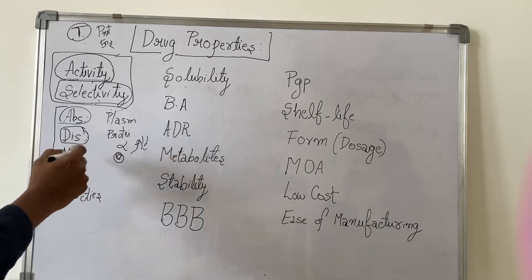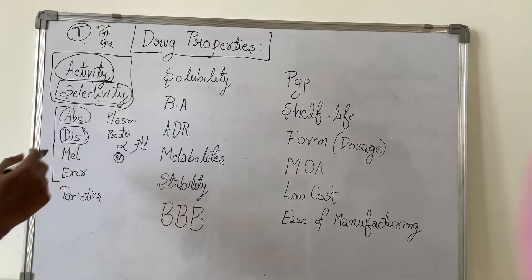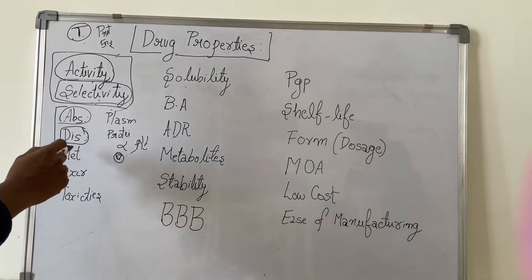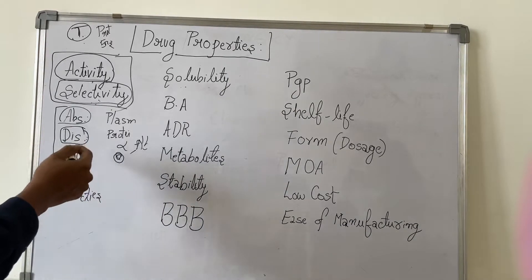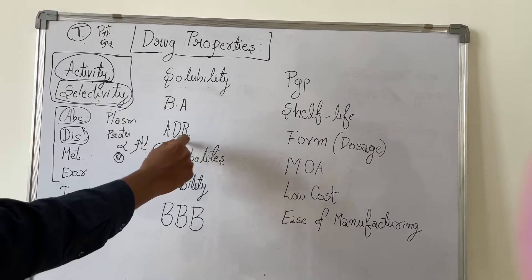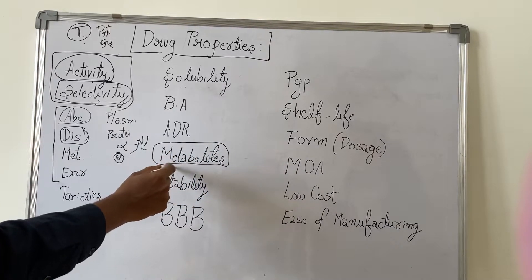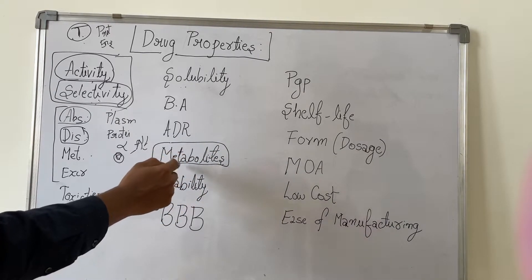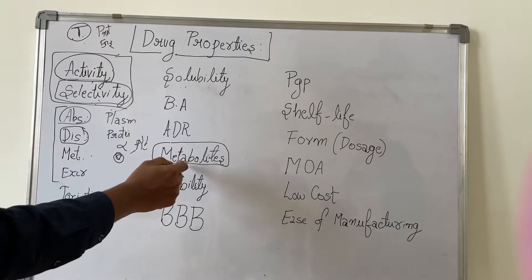Next one is metabolism. How the drug is being metabolized - is it being metabolized through liver or is there any other part where the drug is being metabolized? After this metabolism, what are the metabolites that are forming? If the metabolites are formed, do these metabolites also have any activity or are these metabolites showing any toxicity?